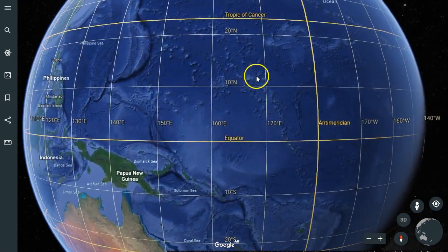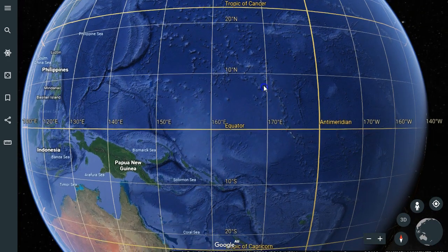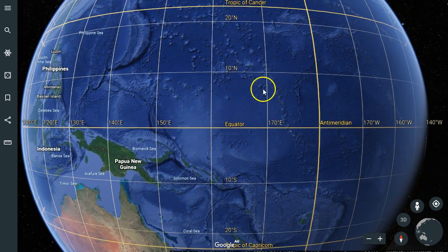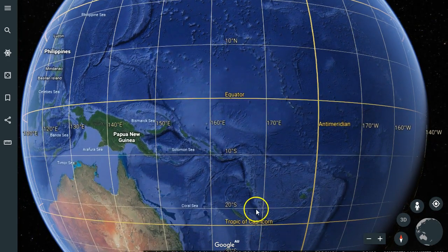There we go, you'll see you've got your Tropic of Cancer above it, and I think it's 23 and a half degrees above it if I remember correctly, and then you've got the Tropic of Capricorn.